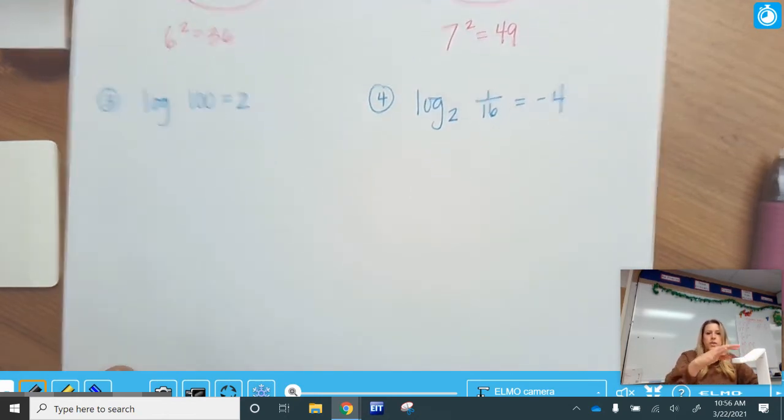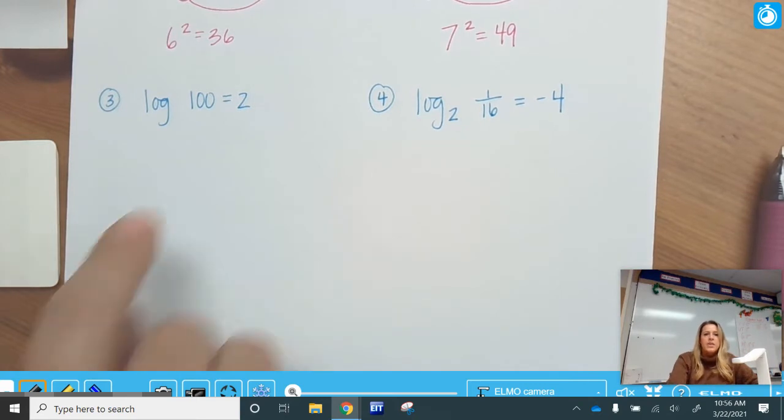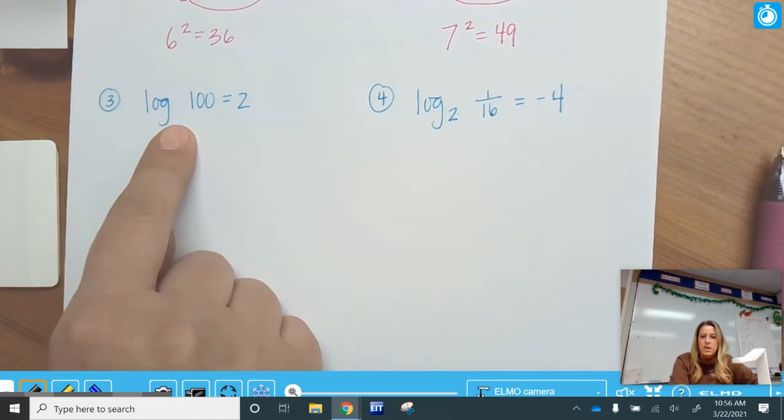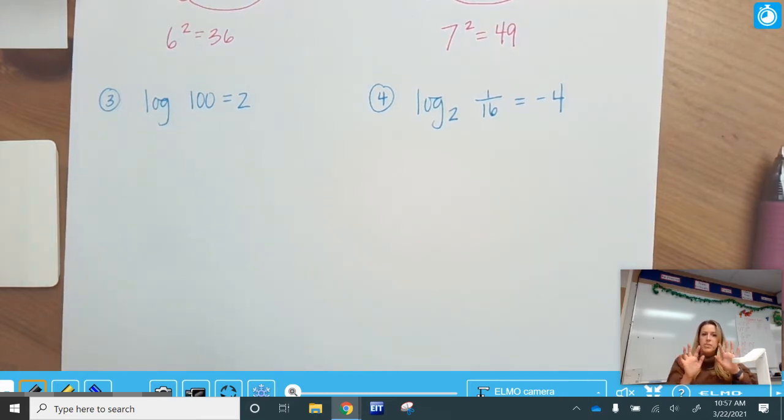All right, so the first thing is you might be like, but there's no base. I don't see anything here. Okay, so you're right. There is no physical base that you see, so when there's not a base that you actually see, you have to realize that it's a base of 10.